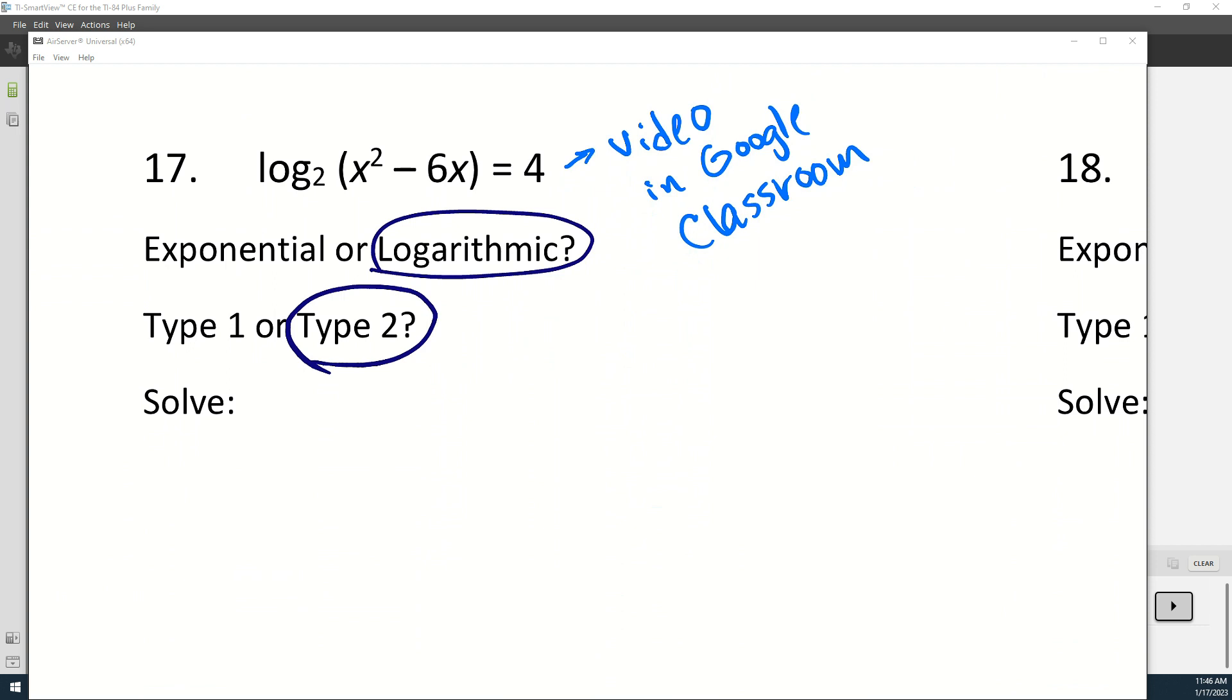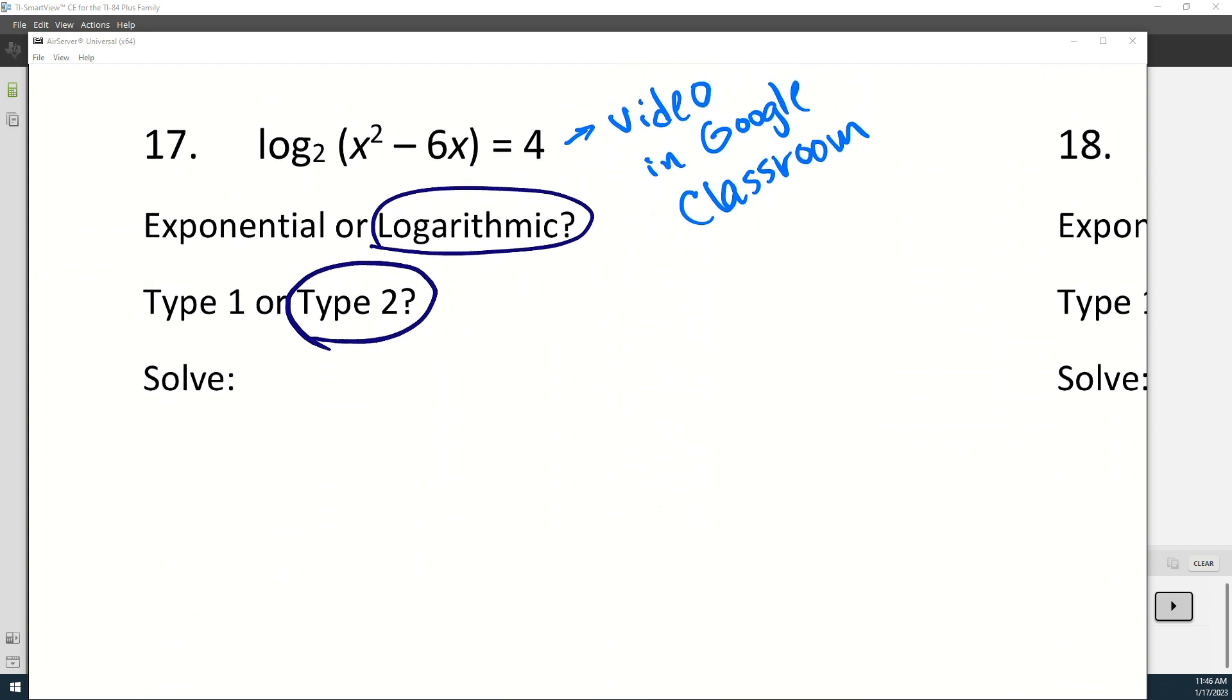And whenever we have type 2 and we have log equals a number, we're going to write in exponential form. And so that is the famous loop. So we would have 2 to the 4 equals x squared minus 6x.